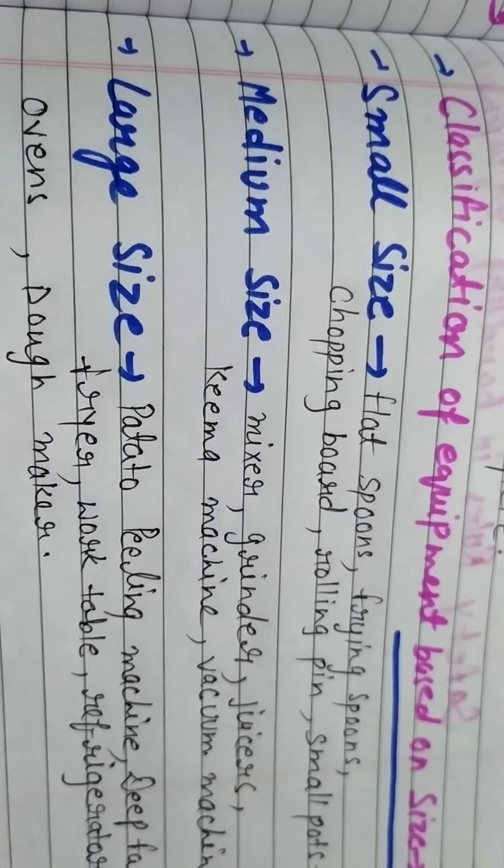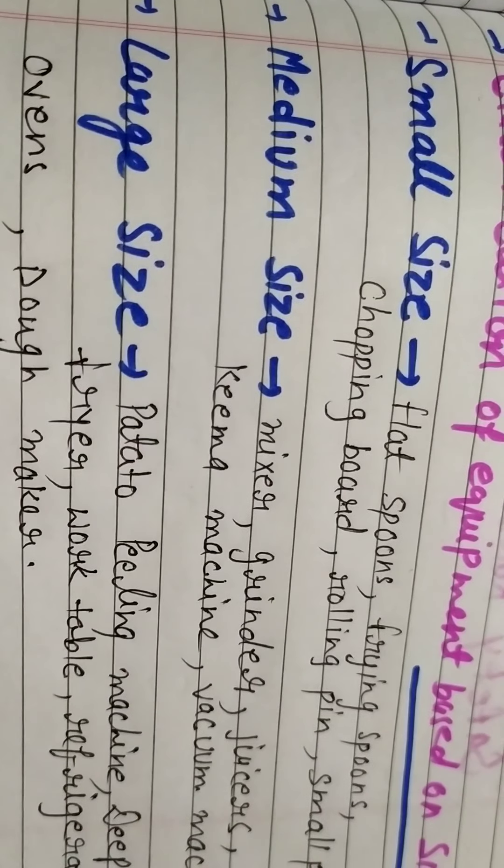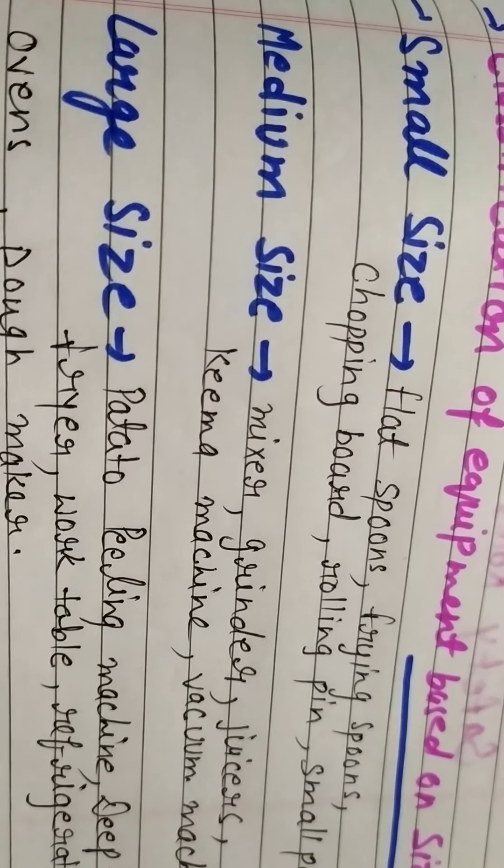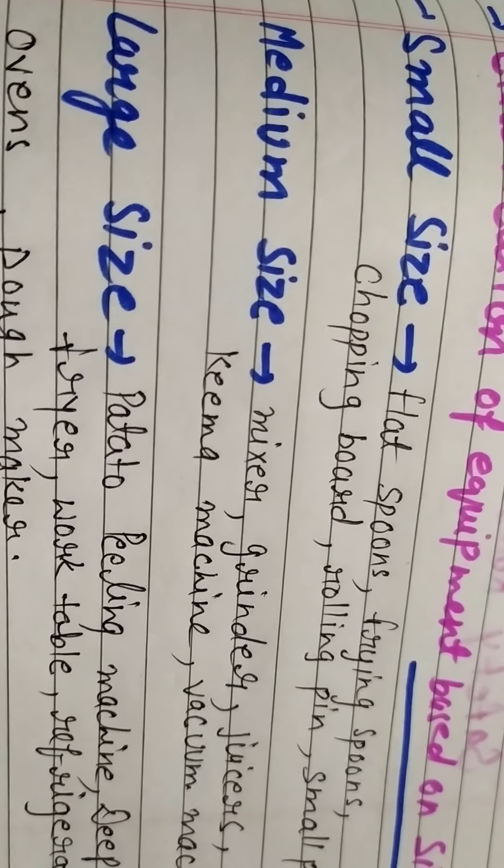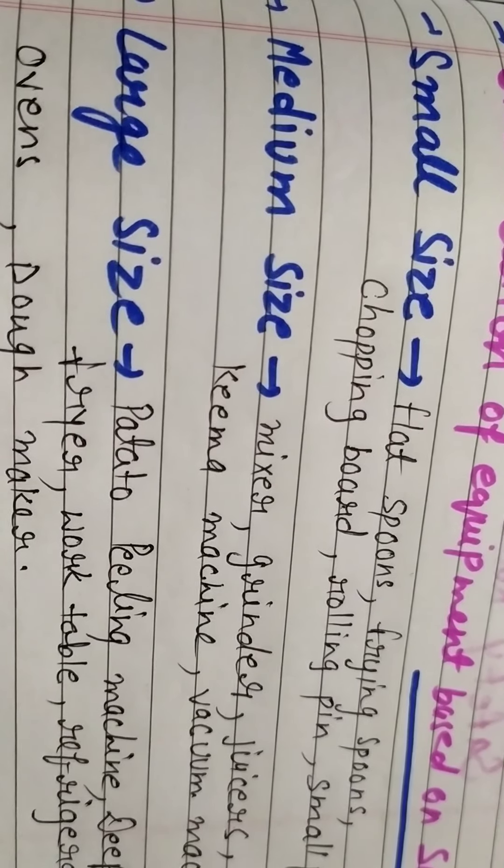And next is large size: potato peeling machines, deep fat fryers, working tables, refrigerator, ovens, cold storage rooms, dome makers.